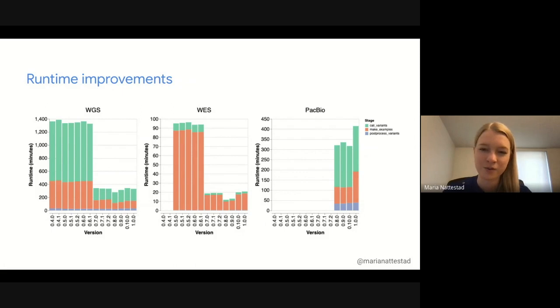The change you see in PacBio where it increased in 1.0 is due to alt-aligned pileups. But we actually already have a fix for that that speeds it up significantly, and I believe that's in version 1.1 already. So check that out.